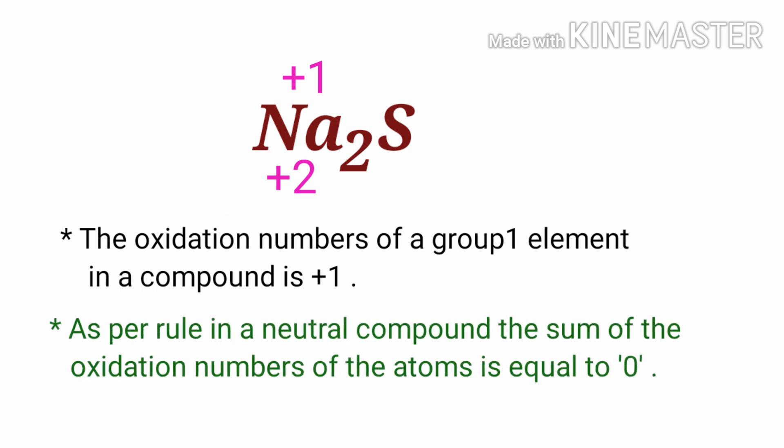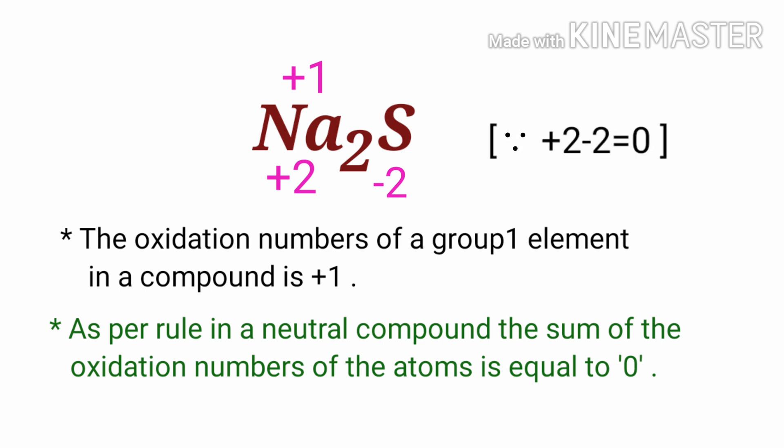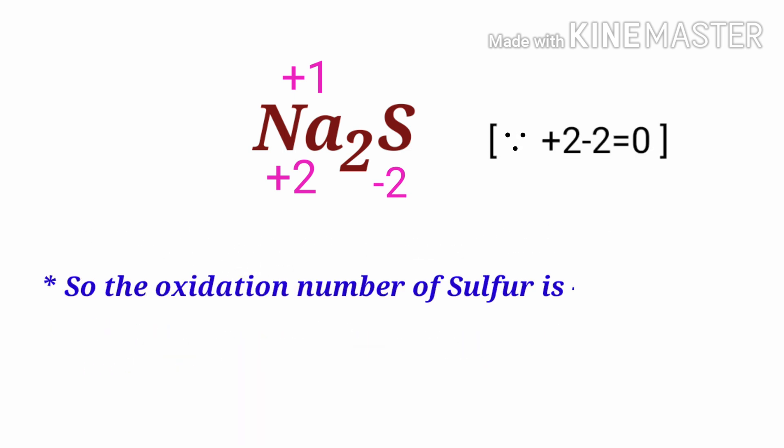As per the rule, in a neutral compound the sum of the oxidation numbers of the atoms is equal to zero, so the numbers along the bottom must add up to zero. Therefore the number under S must be minus two, and the oxidation number of sulfur is minus two in sodium sulfide.